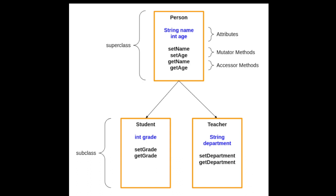So as a Person, a Student has a name and an age and the associated setters and getters. A Teacher also has a name and an age and the associated setters and getters. But a Student also has an extra attribute — in this case, grade level — and the setters and getters for that. And the Teacher has an extra attribute, in this case department, which is a String, with a setter and getter for that. So this allows us to program our objects into a hierarchy.